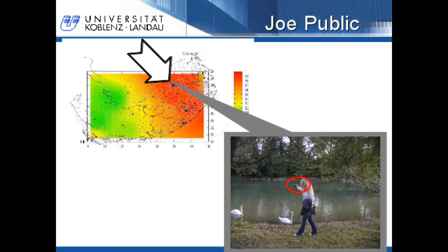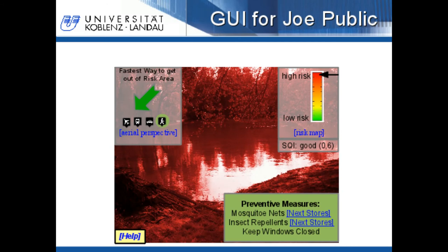On this sheet you can see Joe Public who is located in a hazardous area for, for example, malaria. This is an example for a graphical user interface for Joe Public. The user interface uses augmented reality. The background is colored red, meaning Joe Public is located in a hazardous area. The scale on the upper right shows the same. Below you can see how reliable the displayed information is — the spatial quality of information is important because risk maps are always interpolated, as you cannot measure risk on each point and measurement quality may vary. On the lower right you can see what preventive measures can be done by Joe Public. On the lower left you can find the help button. On the upper left you can see an arrow pointing in the direction to go to get out of the hazardous area as fast as possible.